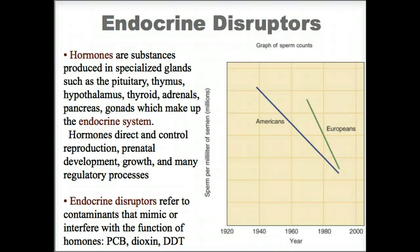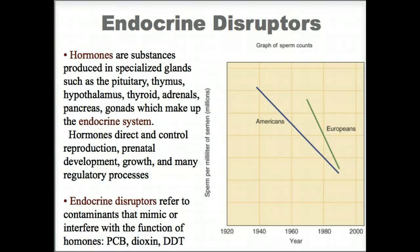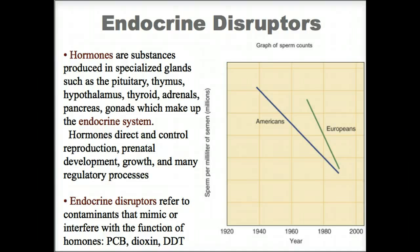Like drugs, endocrine disruptors may inhibit or enhance hormonal activity. As adults, we are fairly resilient to the short-term effects of acute exposure to endocrine disruptors. However, during development, organisms are very vulnerable to interference that can cause birth defects or other problems that may not become apparent until later in life.